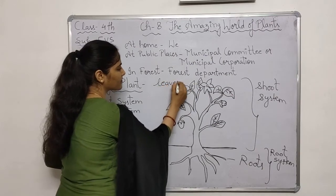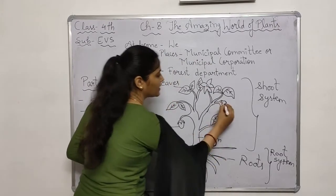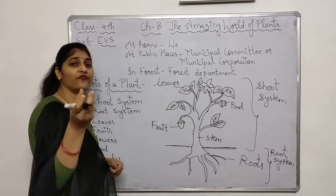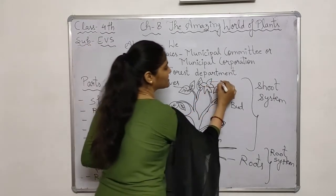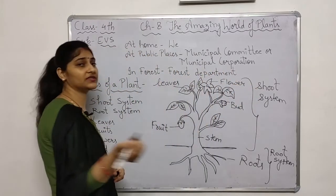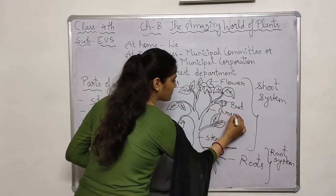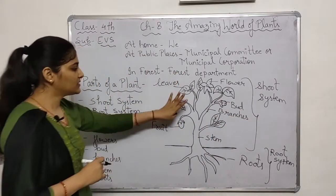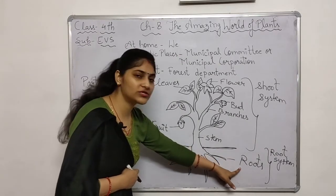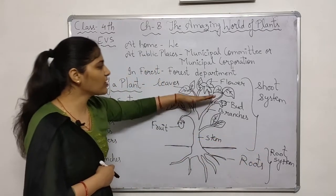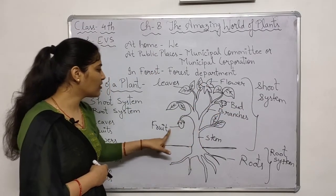Above the soil layer, all these parts are present, and this complete portion we call the shoot system. So below the soil layer we have the root system, and above the soil layer we have the shoot system. In the shoot system we have leaves, fruit, stem, bud — bud means the flower before it blooms, which we call kali in Hindi. When the kali blooms it becomes a flower. We also have branches.